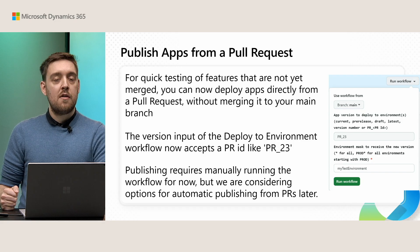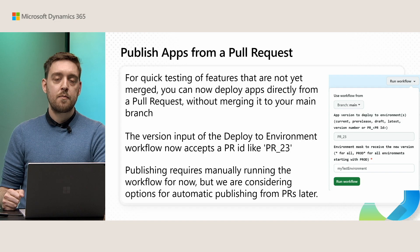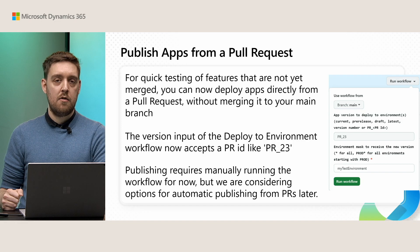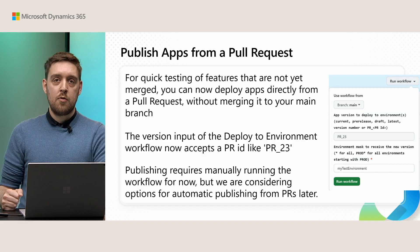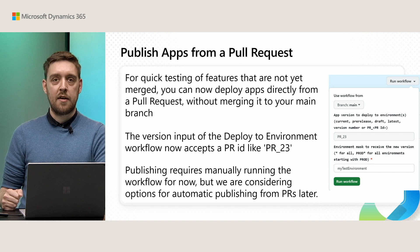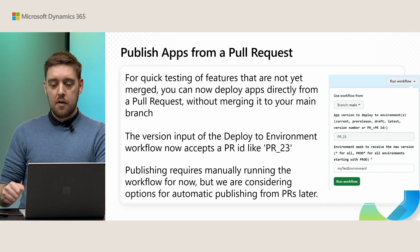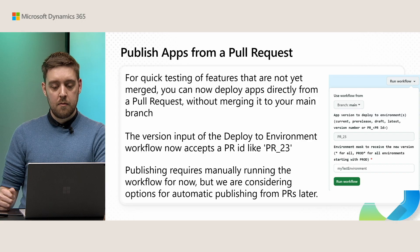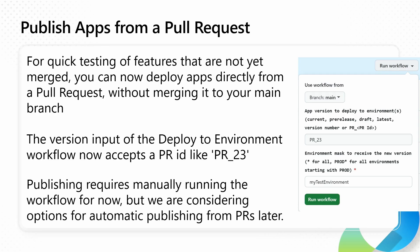For now, this is a manual process where you will use the publish to environment workflow — give it a pull request ID instead of a version and then click run workflow. Later on, we want to investigate how we can do this automatically, so that every time you push a new change to a PR, those changes will automatically flow into your online environment. All you have to do is give it a pull request ID written as PR underscore ID.